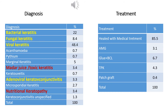In this study, viral keratitis was found to be the most common, followed by bacterial and fungal keratitis. Marginal keratitis was also common. Rarely, there was Acanthamoeba and Pythium keratitis. Among non-infectious causes, nutritional and chemical keratitis were most common. Adenoviral keratoconjunctivitis and microsporidial keratitis were also found. Majority of patients healed with medical treatment alone. Few required glue with bandage contact lens, and very few required amniotic membrane grafting or penetrating keratoplasty. Rarely, patch grafting was done.